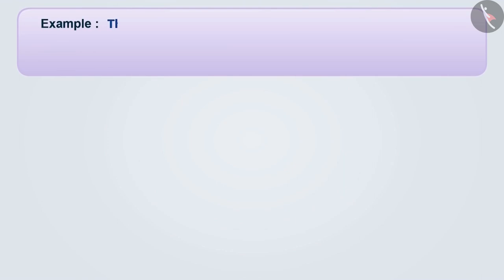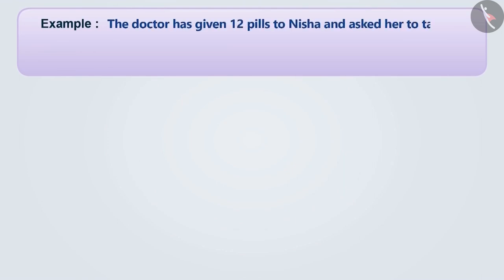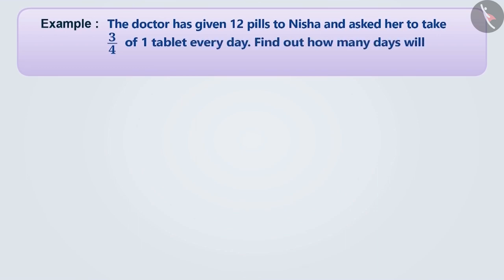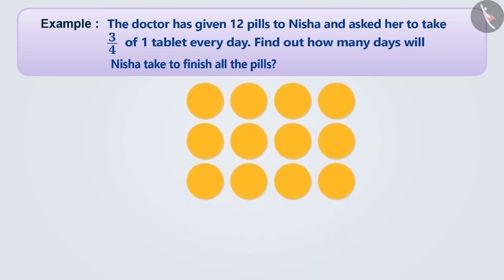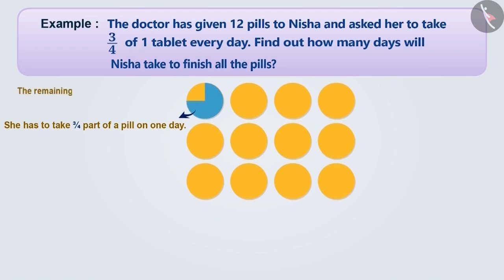Next example: The doctor has given 12 pills to Nisha and has asked her to take 3 fourths of 1 tablet every day. Find out how many days will Nisha take to finish all the pills. The doctor has given 12 pills to Nisha. Suppose each of these circles is a pill. Nisha consumes 3 fourths of the pill every day.